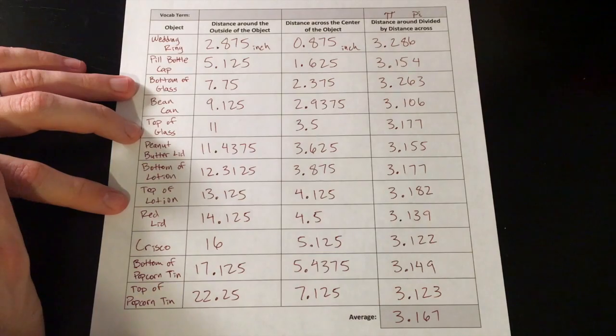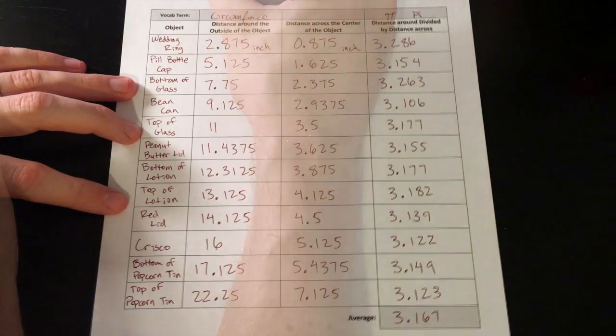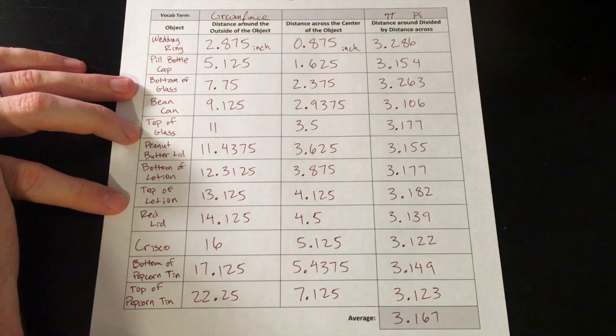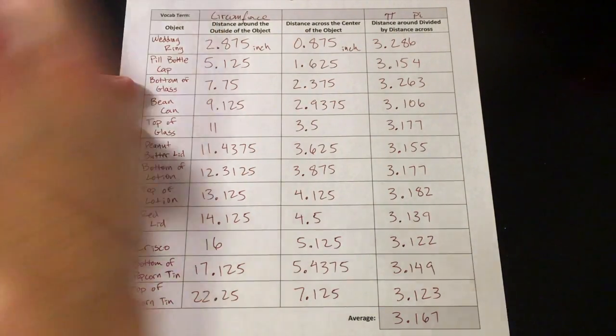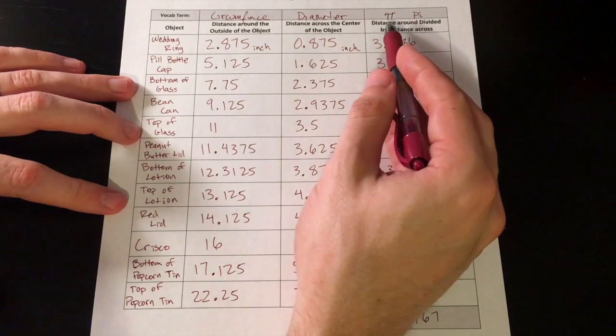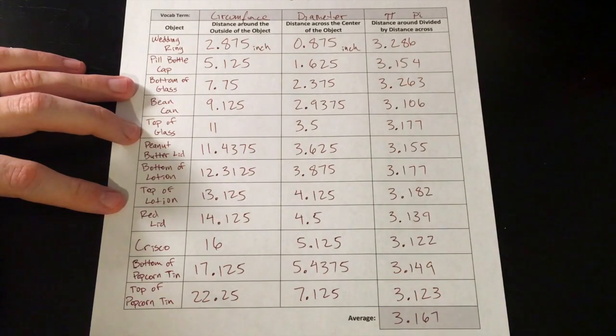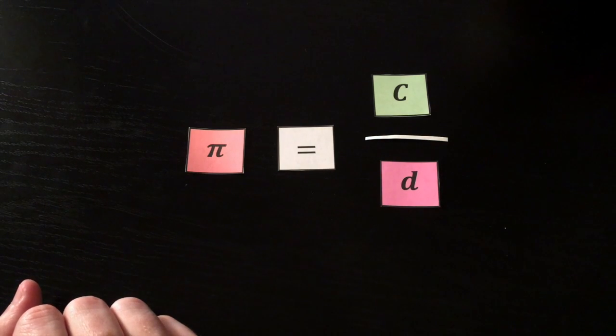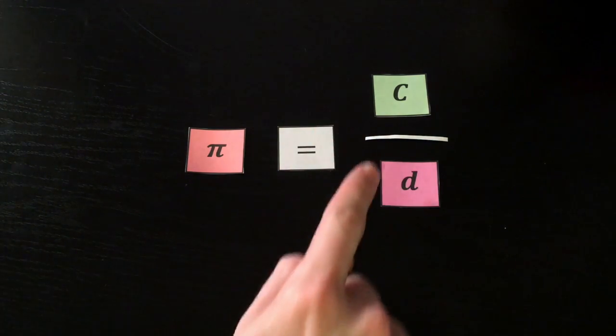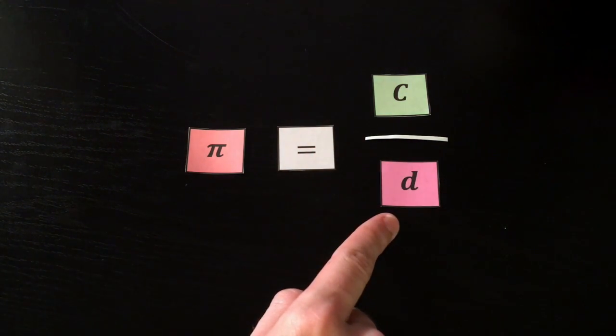By the way, the distance around the outside of the object, do you know that vocab term? Yeah, it's the circumference. And what about the distance across the center of the object? That's the diameter. So what is pi? Pi is the ratio of the circumference over the diameter. So let's take a look at that in a little bit of detail. This is what we just said, that pi is the ratio of the circumference divided by the diameter.